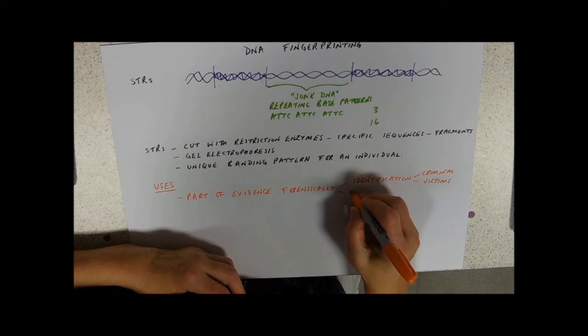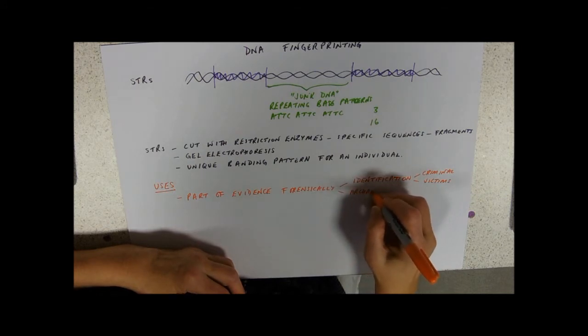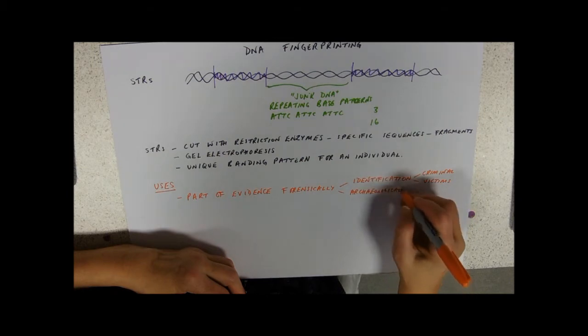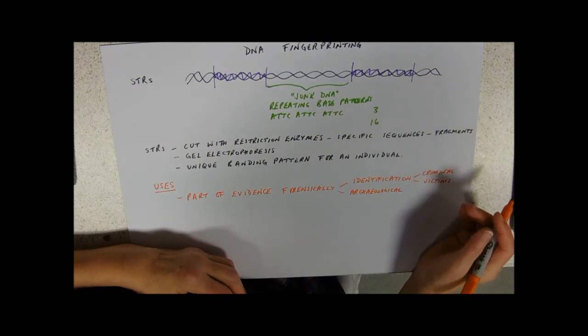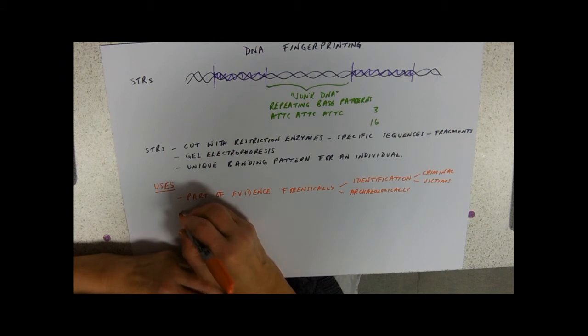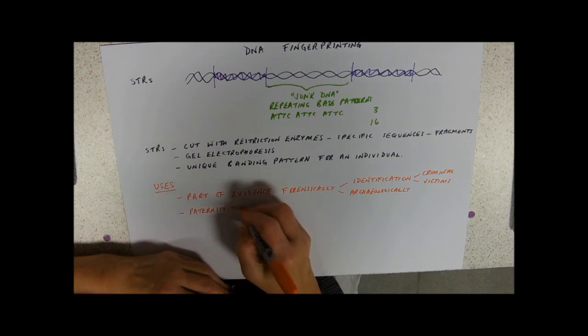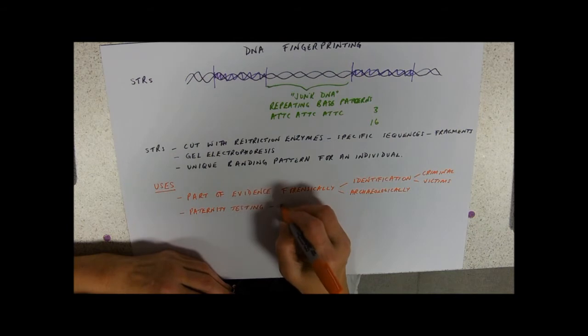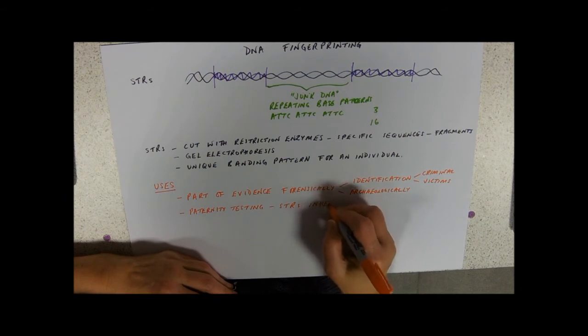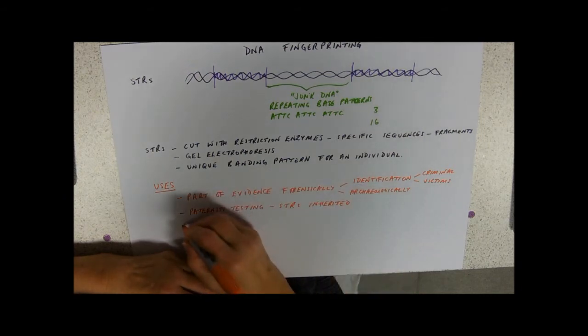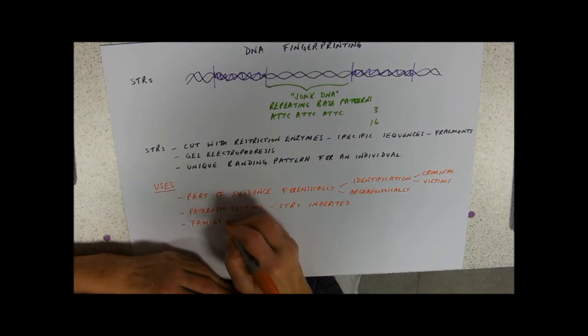We might be using it archaeologically. And now of course we've mapped the human genome, so we can tell things like hair color, eye color that person had. And we can use it for paternity testing, and that's because your STRs are inherited.